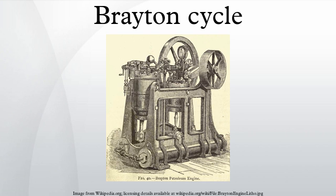A Brayton type engine consists of three components: a compressor, a mixing chamber, and an expander. In the original 19th century Brayton engine, ambient air is drawn into a piston compressor where it is compressed — ideally an isentropic process.